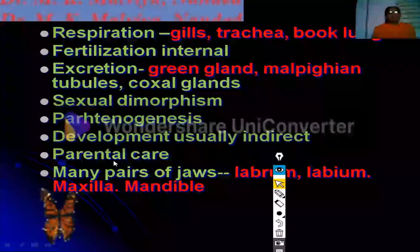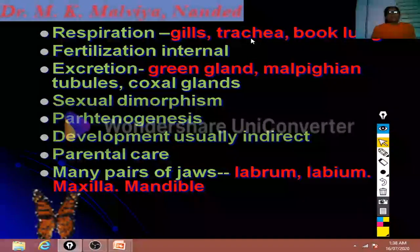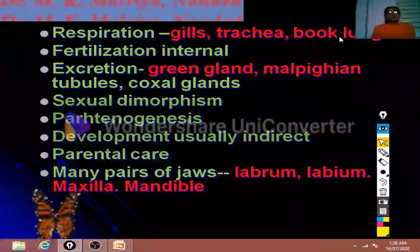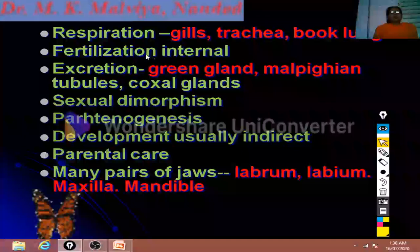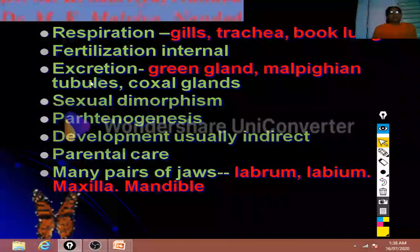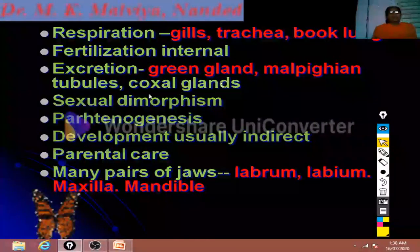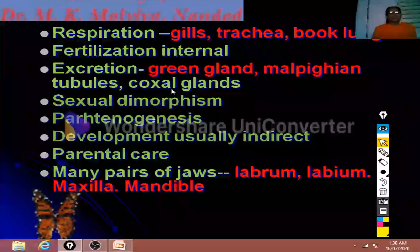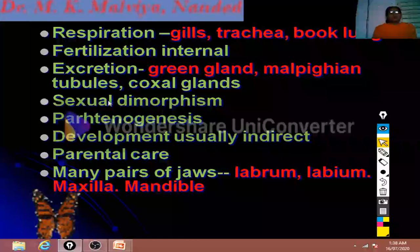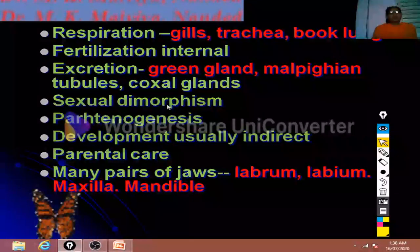About respiration, these animals respire through the trachea and gills. In some animals, book lungs are present — for example, in the scorpion. Fertilization takes place internally. Excretion takes place with the help of green glands and the Malpighian tubules. In some animals, coxal glands are also present, and they show separate male and female forms known as sexual dimorphism.